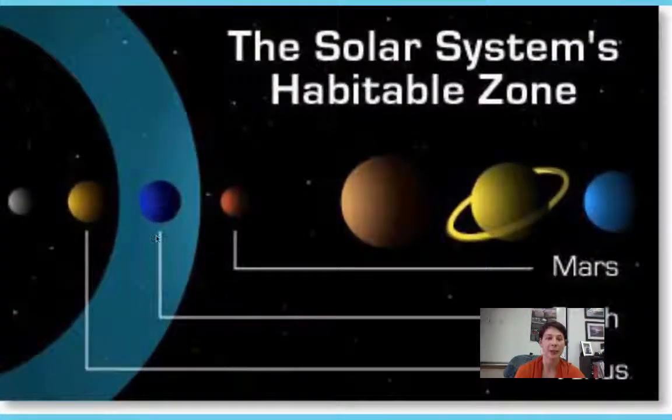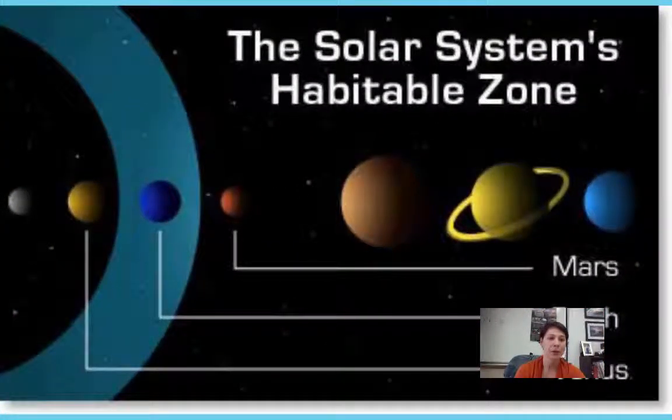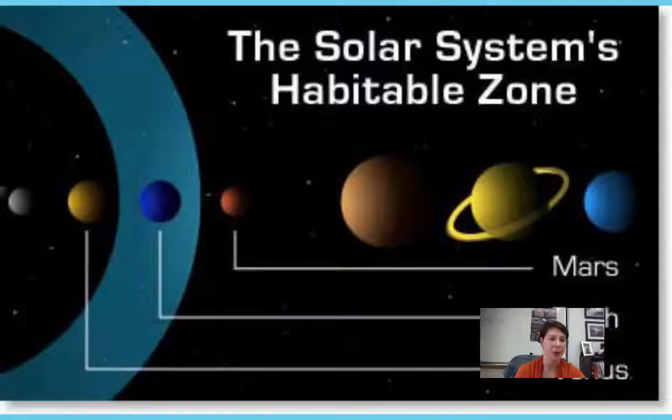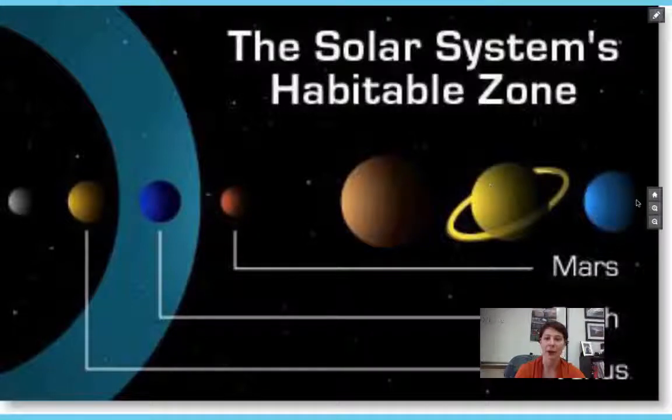And that really is because Earth is not too close or too far away from the Sun. It is in this what we call this Goldilocks zone. And so if Earth was too close to the Sun, so we're imagining the Sun would be here. This is Mercury, Venus, Earth, Mars, Jupiter, Saturn, Uranus.